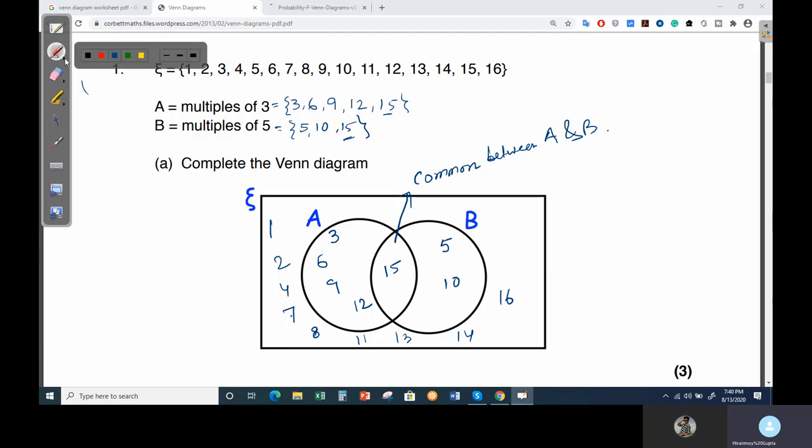Now probability of A intersection B, in the intersection part, how many numbers are there? In the intersection you can see there is only one value. That is fifteen. So when you are going to find probability of A intersection B, there will be only one value coming between them. Out of A intersection B, there are sixteen numbers total in ξ. So your probability will be one over sixteen. Only one value is coming among all the sixteen values.